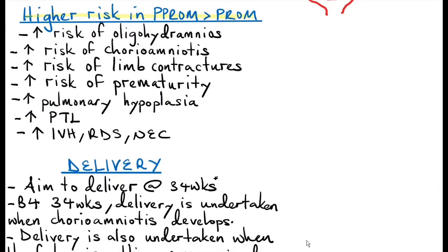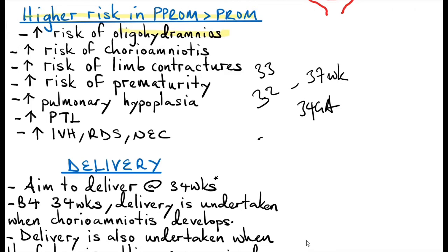Some complications are more prominent in PPROM than in PROM, such as oligohydramnios. This is because patients start draining from an earlier gestational age, say 32 to 33 weeks, so by the time they reach 34 weeks they've already lost a significant amount of amniotic fluid. Because the membranes have been ruptured for a long time, there is increased risk of chorioamnionitis and limb contractions due to oligohydramnios, as the fetus gets compressed. There is also risk of prematurity.